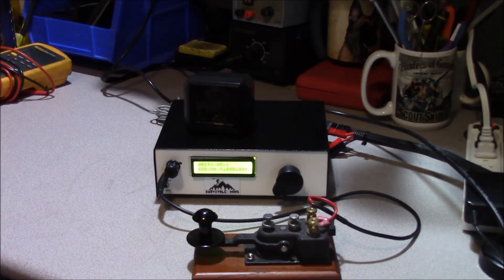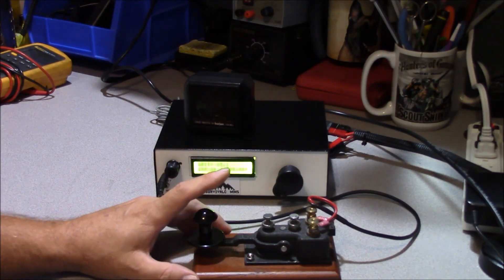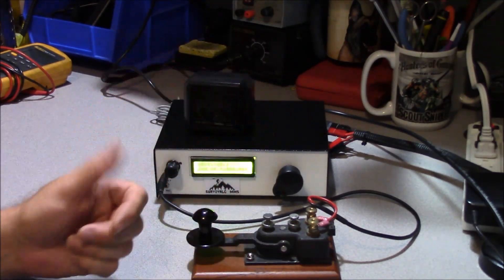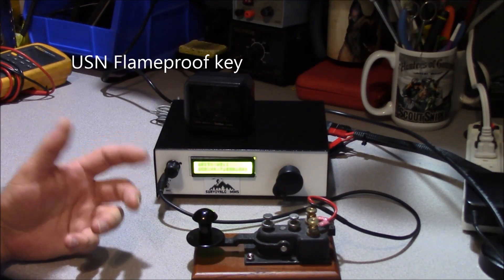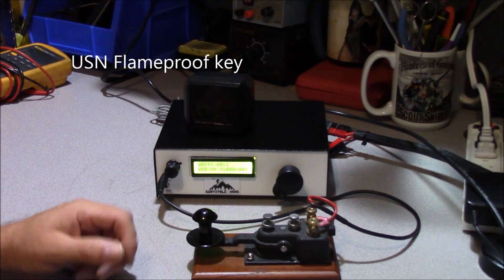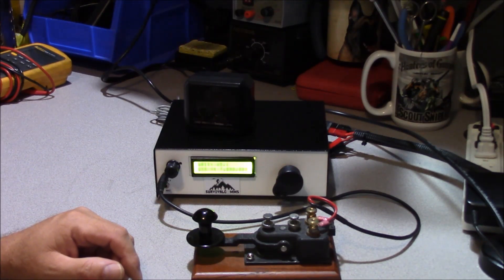Well since we've equipped ourselves with the speaker so we can receive information, now we need to be able to send information. And if we want to send it via Morse code we can do so with a key. This is kind of a large key, you can get much more compact versions. And do it with simply just a simple way to close the keying circuit to be able to send characters over the air.